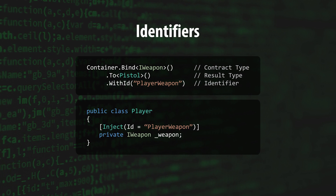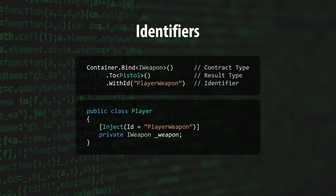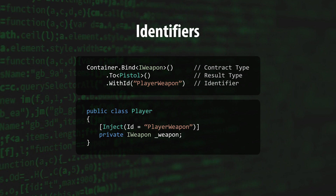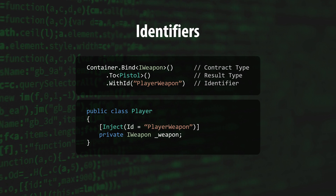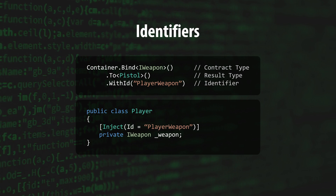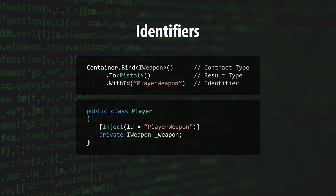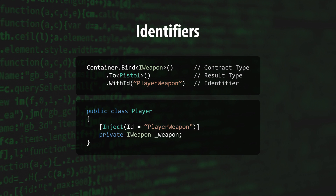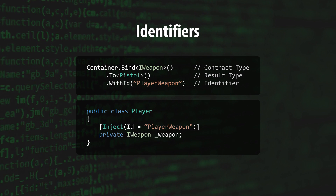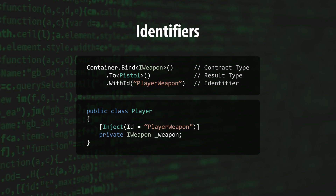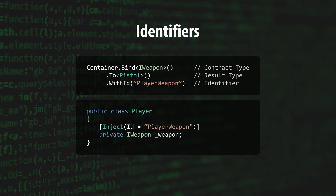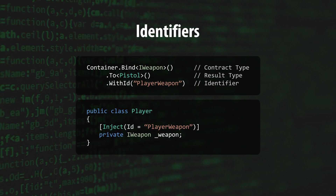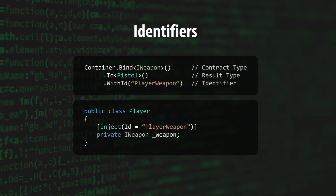The WithId method allows you to uniquely identify your bindings using IDs. This is useful when you need multiple distinct bindings for the same contract type. All you need to do is pass the same ID into the Inject attribute of the properties that you want to receive this particular injection. The ID can be a string, enum, or any other class that implements the equals operator.